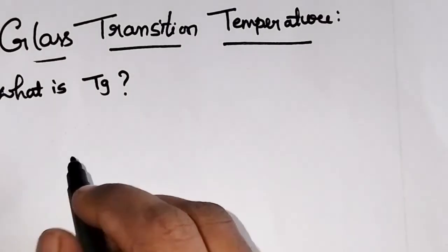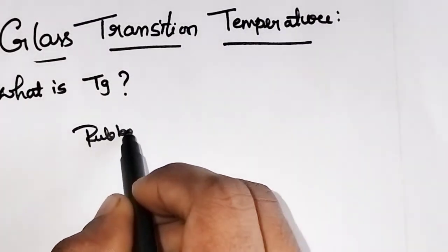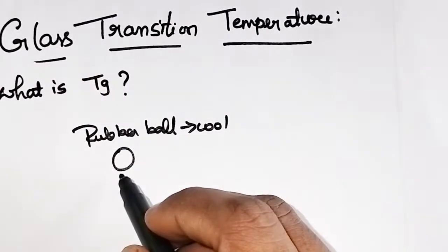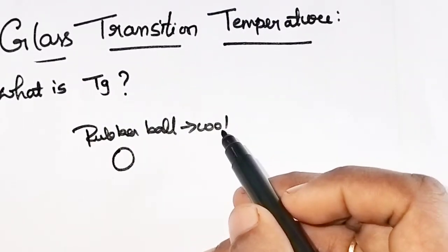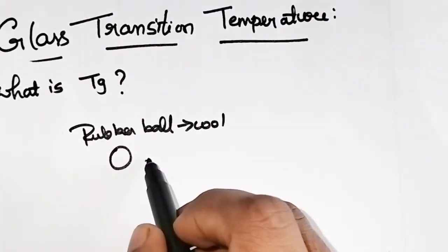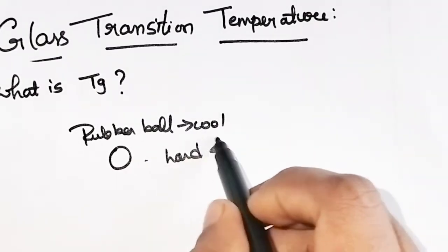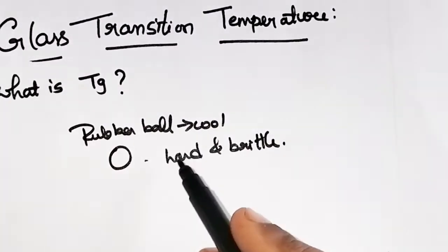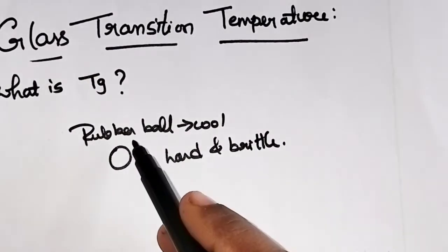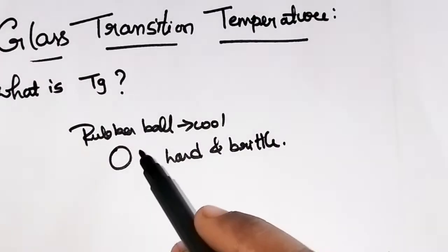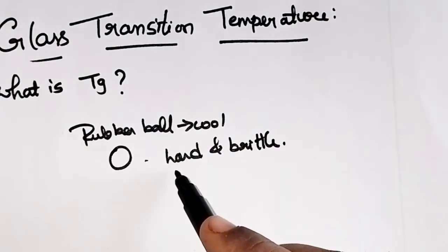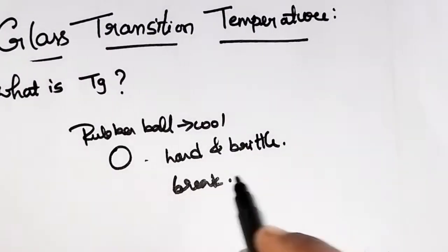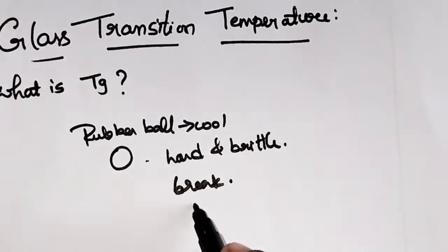Now, if you have a rubber ball and you cool it, at a certain cold temperature the ball becomes hard and brittle. Whenever you cool below a certain temperature, the rubber ball — which is usually soft and flexible — becomes hard and brittle, and it will break into pieces just like a glass ball if it falls on a hard surface.